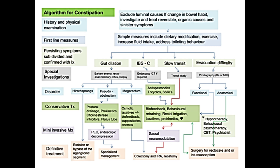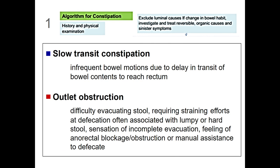If you tolerate me for more minutes, I can help you interpret this algorithm that I find very easy and very useful for all of us. Start at step one: you see a patient with constipation in your office. The most important thing — mandatory — is to take a very detailed history and physical examination, to try to differentiate if the constipation is slow transit or outlet obstruction. Slow transit is infrequent bowel motion due to delay in transit of bowel contents to reach the rectum.